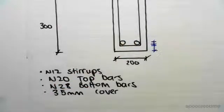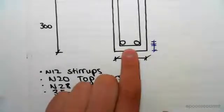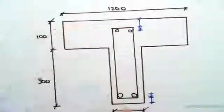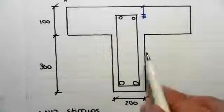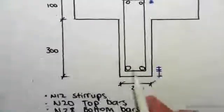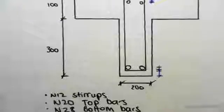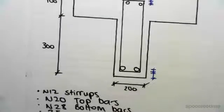The N28 bars are on the bottom. The reason is because we're doing a sagging example. We need the bigger bars on the bottom. If we were to do a hogging example, these bars would probably swap because now the tension will be in the top, whereas for the sagging the tension is in the bottom.